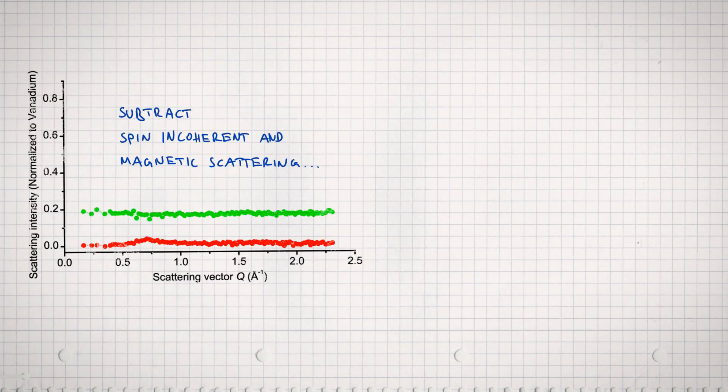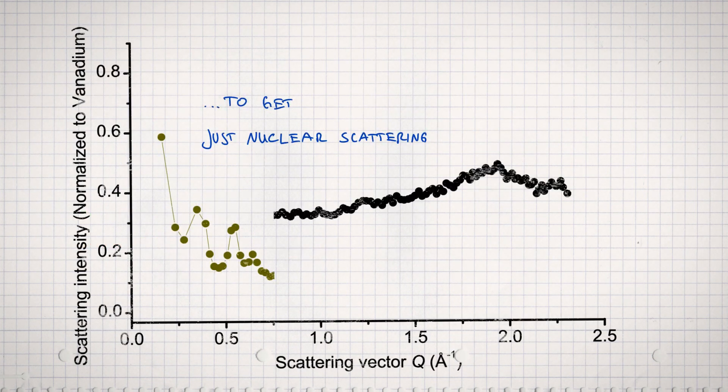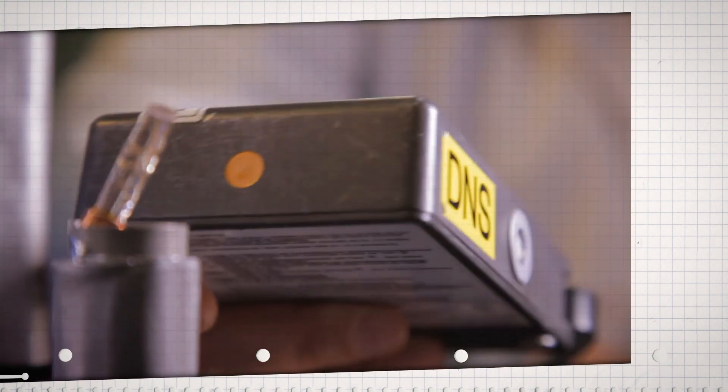Theoretically, one could use DNS to clean up Bragg peak measurements from background scattering, like in this example. But this isn't usually done.